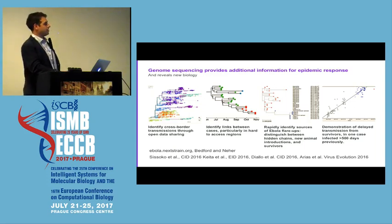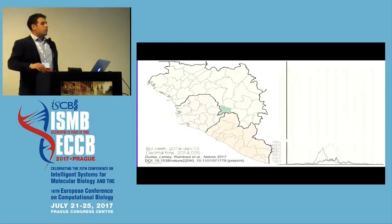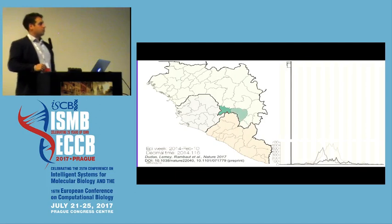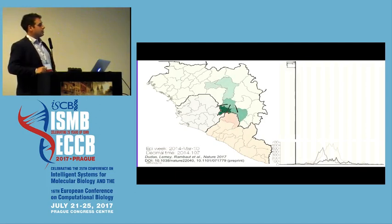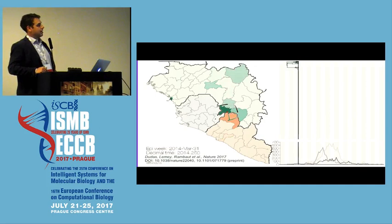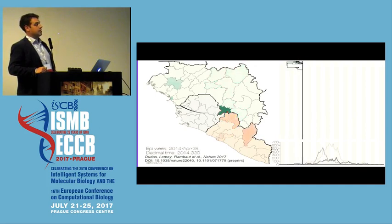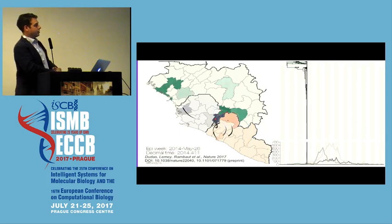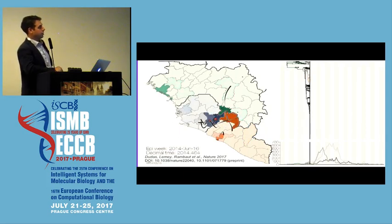A talented phylogeographer, Gytis Dudas, working for Andrew Rambaut at the time, put together an animation recapitulating the entire outbreak from 1,600 genome sequences generated from various groups across the course of the epidemic.